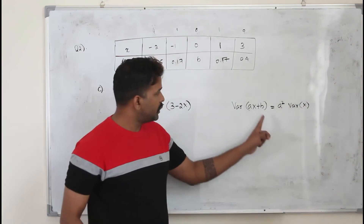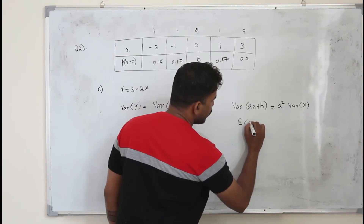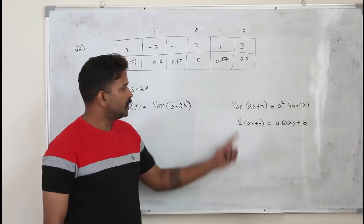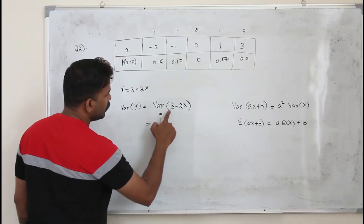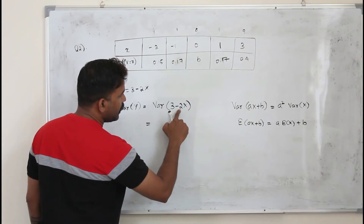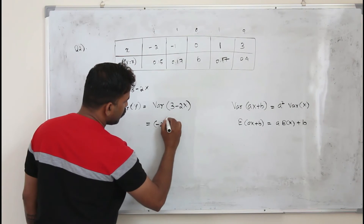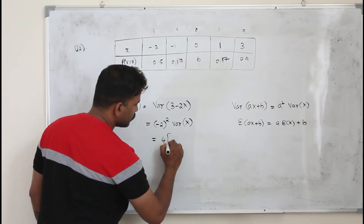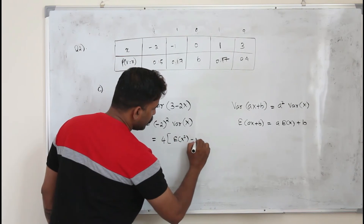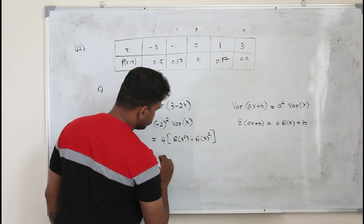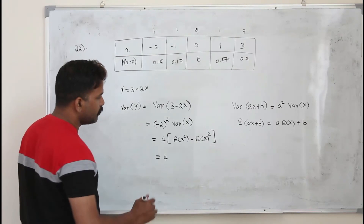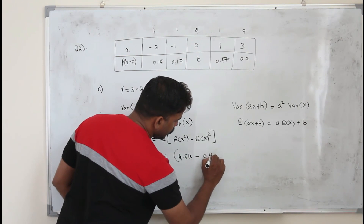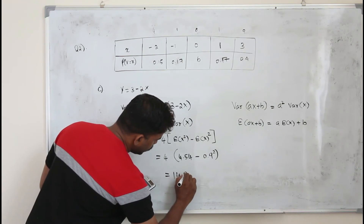Variance of ax plus b equals a squared times variance of x — you can forget about the constant b. If it is E of ax plus b, it's just a times E of x plus b. So here, for variance of 3 minus 2x, you can forget the 3. The coefficient a is minus 2, so a squared is 4. The formula for variance of x is E of x squared minus E of x whole squared: 4.54 minus 0.9 squared. The final answer for variance of y is 14.92.